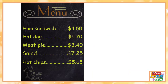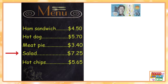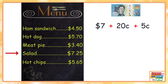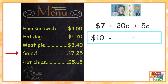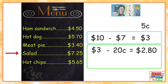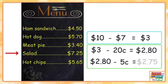Now on to our last problem. Starting with ten dollars again, this time I'm going to pretend I'm buying a salad for seven dollars and twenty-five cents. I'm going to break down the cents — seven dollars plus twenty cents plus five cents — because twenty cents plus five cents gives me twenty-five cents. Starting with the dollars: ten dollars minus seven dollars leaves me with three dollars. Moving on to the cents: three dollars take away twenty cents brings us to two dollars and eighty cents.